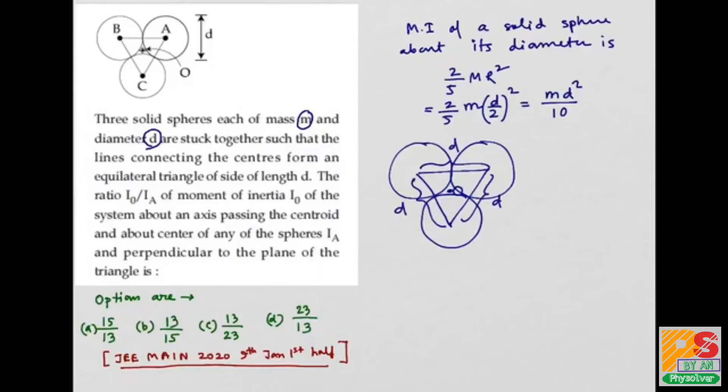For that we need to know the parallel axis theorem. Parallel axis theorem says that moment of inertia about any axis which is parallel to another axis passing through the center of mass of a body is given by the sum of moment of inertia about the axis passing through its center of mass plus MX squared, where X is the perpendicular distance between the two axes.